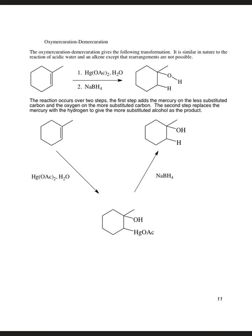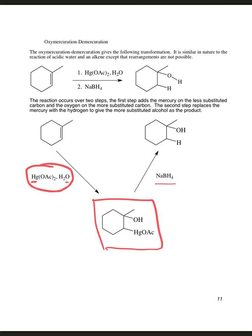The next reaction is oxymercuration-demercuration. When we look at the reagents — mercury acetate in water — the least electronegative atom is the mercury, the nasty heavy metal. So mercury ends up on the less substituted carbon, with the more electronegative oxygen adding to the more substituted carbon, giving us an intermediate. Then we reduce off with sodium borohydride. The name 'hydride' tells us the hydrogens react as H⁻, so they reduce off the mercury, replacing it with a hydrogen. Overall, we've added water across the pi bond with the oxygen on the more substituted carbon.